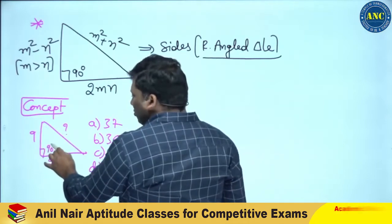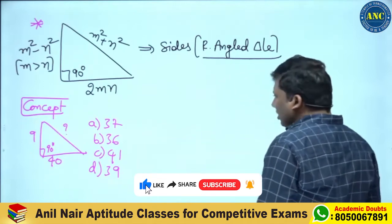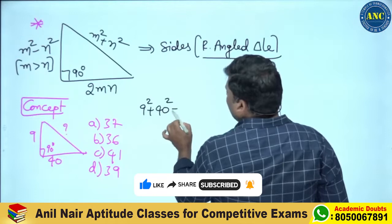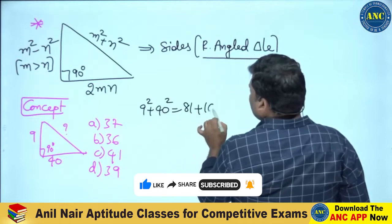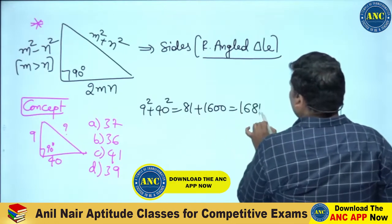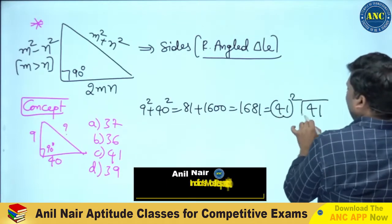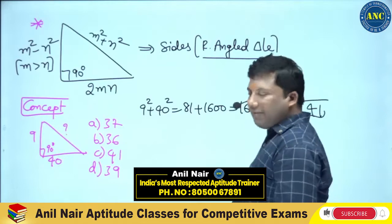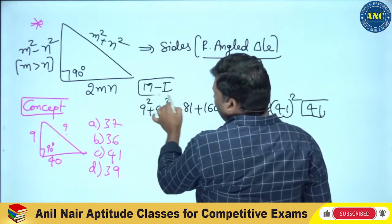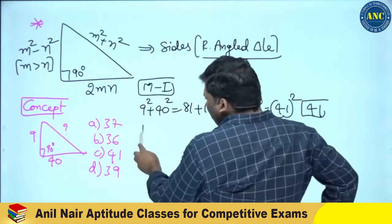Most students will use the Pythagorean triplet approach: 9² + 40² = 81 + 1600 = 1681, which is 41². So the answer is 41. This is Method 1 — straightforward computation.